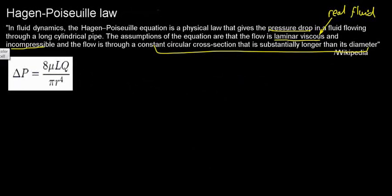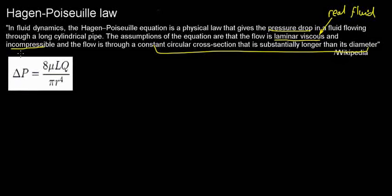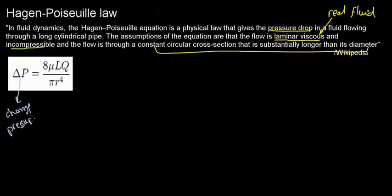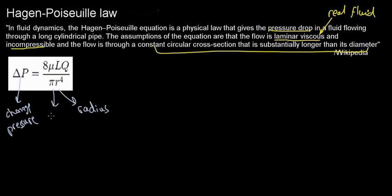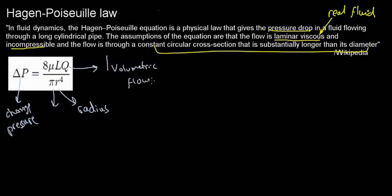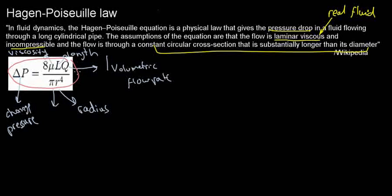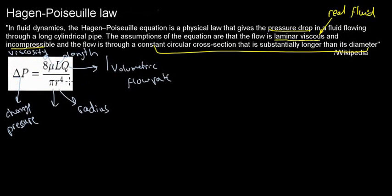Let me make the equation a little simpler. The change in pressure equals 8μLQ divided by πr⁴. Here, ΔP is the change in pressure, r is the radius, Q is the volumetric flow rate (also noted as V in our lecture slide), L is the length of the pipe, and μ is the dynamic viscosity. Rather than discussing the full mathematics, let's look at what matters: consider the radius.